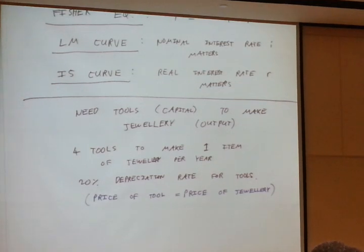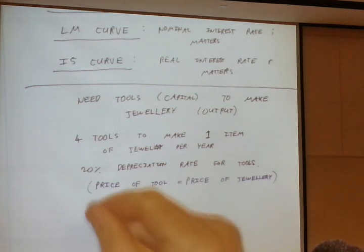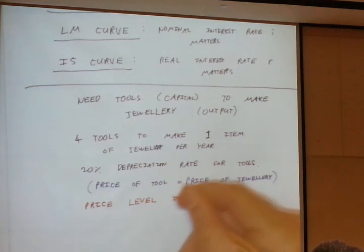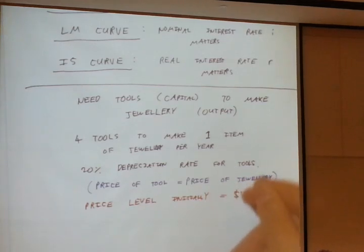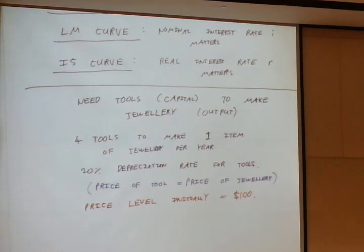So we can talk about inflation easily without saying whether it's inflation of the price of tools or inflation of the price of jewelry, or any of the goods for that matter. Okay, so that's the example. So now I need to describe the monetary side of this economy. This is about the real side of it, the skill of the craftsman, the usefulness of the tools. Now I need to describe the monetary side. So let's say initially, the year that you start out in business, the price of an item of jewelry, and also a tool, is $100. The price level initially is $100.